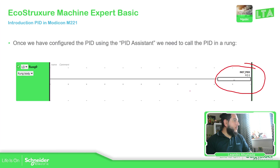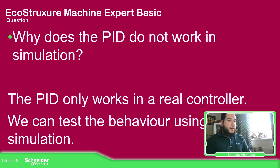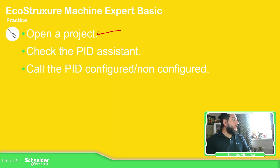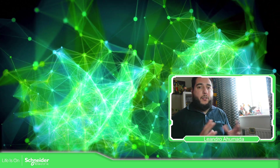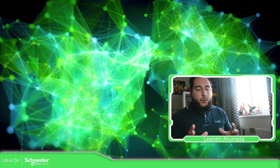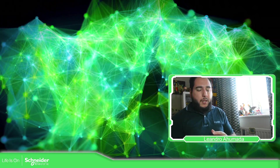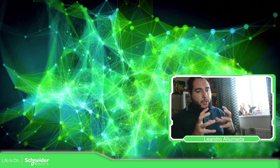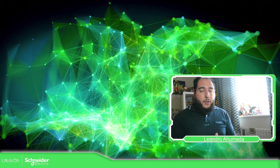So if we go back to the presentation, we already covered this part. This is something important because sometimes you are trying to test the logic and you use a simulator, but in the case of the PID, the simulator doesn't work. You must have a real M221 in order to test the PID — that is mandatory. We already opened a project, checked the PID system and its different parts, and called the PID. So what we've seen today is a quick overview of the different parts of the PID that you need to configure and how to call the PID, and how the different parts inside the software link to the control loop system in our process. Thank you very much for watching this video, and I'll see you on the next one.